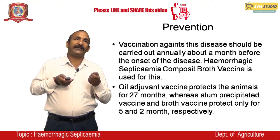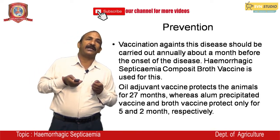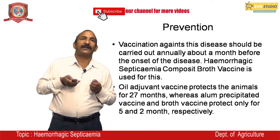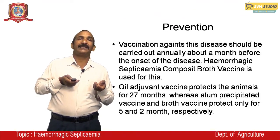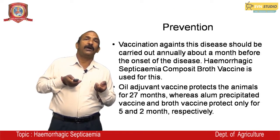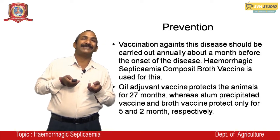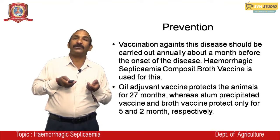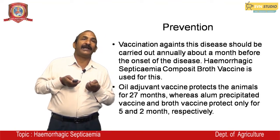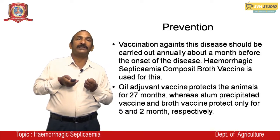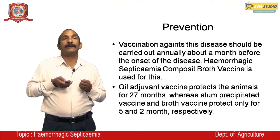The oil-adjuvant vaccine protects animals for 27 months, whereas the alum-precipitated vaccine and another vaccine protect for only 5 and 2 months respectively.